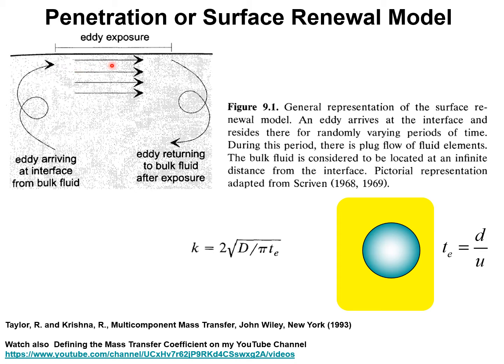The average time of exposure of such eddies is T sub E and during this time of exposure to the adjoining phase there is a plug flow of elements along the interface and during this period mass transfer can occur by exchange with the corresponding components in the adjoining phase.